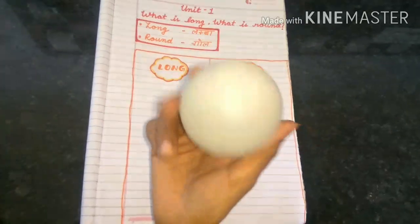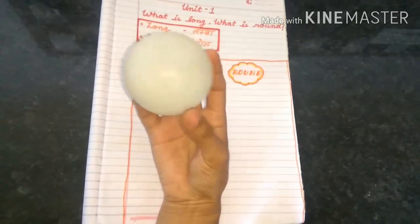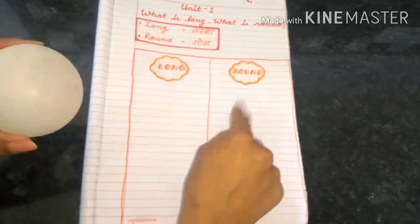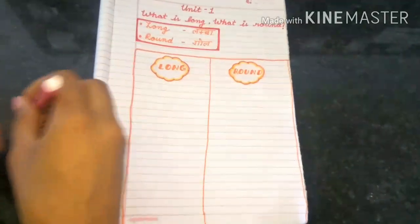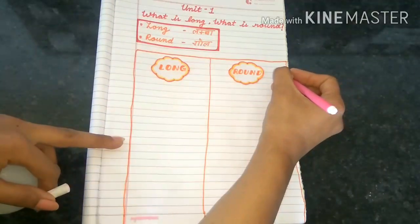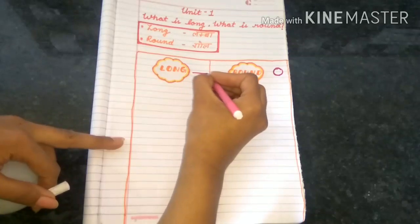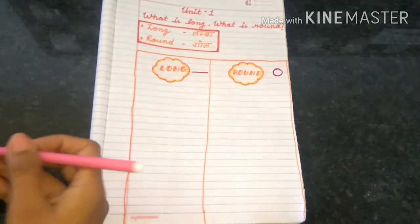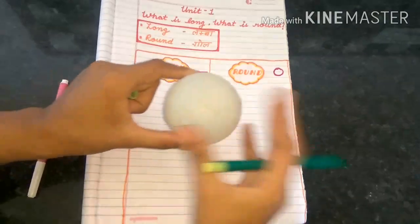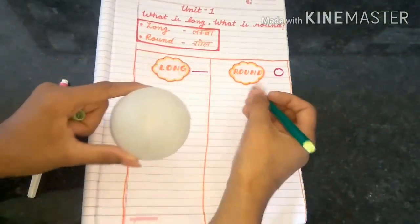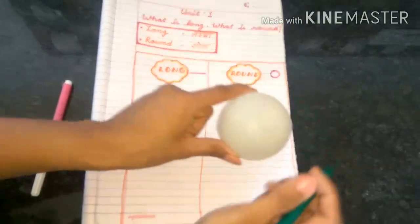Our first object is this. You know what this is? It's a ball. So how is it looking? Is it looking round or long? Round objects look like this and long objects look like this. Yes, it is looking like round. So let's draw this ball on the round side.